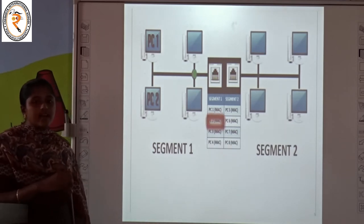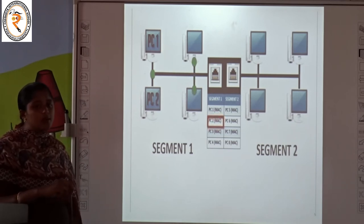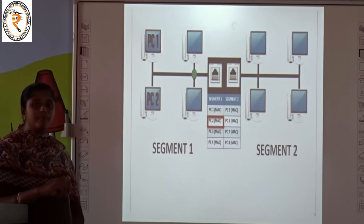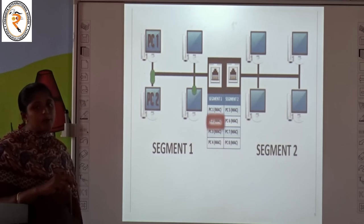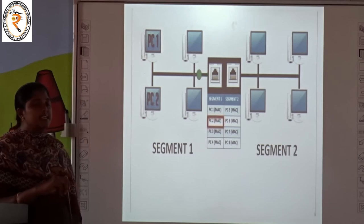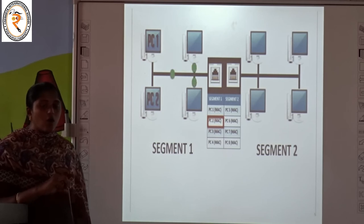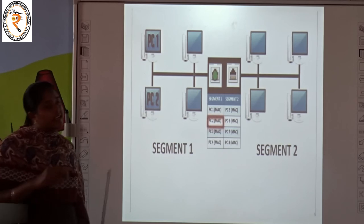In networking we have seen about the road network, then the mobile network. If mobile phones get connected to a network it is a mobile network, and they get connected through towers which help pass the information. Then we have seen about computer network — all computers connected together through the network is called a computer network.